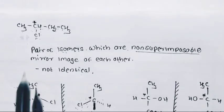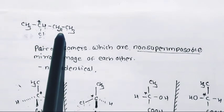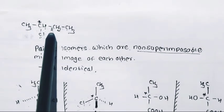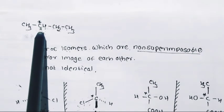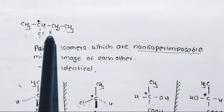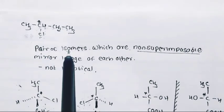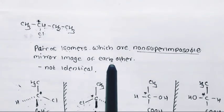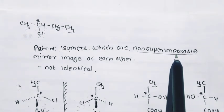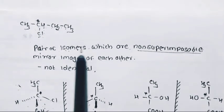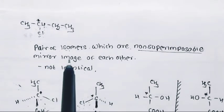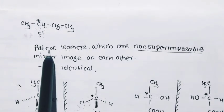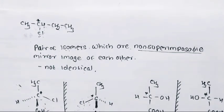When any molecule contains a chiral carbon atom, it acquires a unique property — it will exist as a pair of isomers. This pair of isomers are non-superimposable mirror images of each other. 'Superimposable' means equal or similar, but this pair of isomers are non-superimposable — meaning they are different from each other.